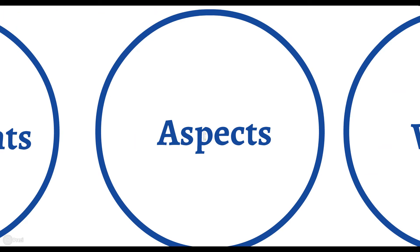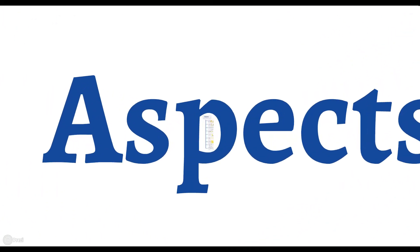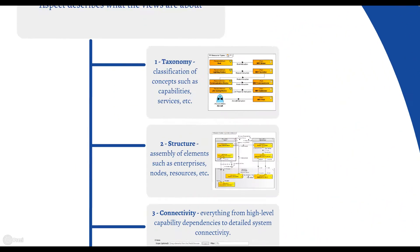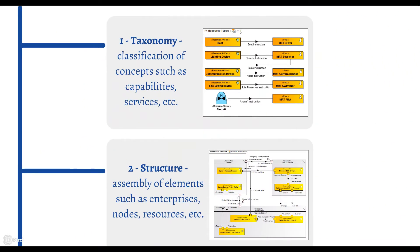NAF 4 aspects. Aspects describe what the views are about. NAF 4 consists of these aspects. Taxonomy is a classification of concepts such as capabilities, services, etc.